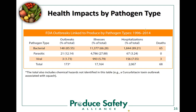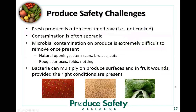All of a sudden, the growers in your training are going to realize that the numbers on this slide are much, much lower than the actual cases of foodborne illness. It's an opportunity to drive home how important this information is that we're covering in the course. Slide 17 wraps up this section talking about food safety challenges of fresh produce. I usually take the time to go through the notes on this slide — it gives a lot of detail, really driving home the point of this section.